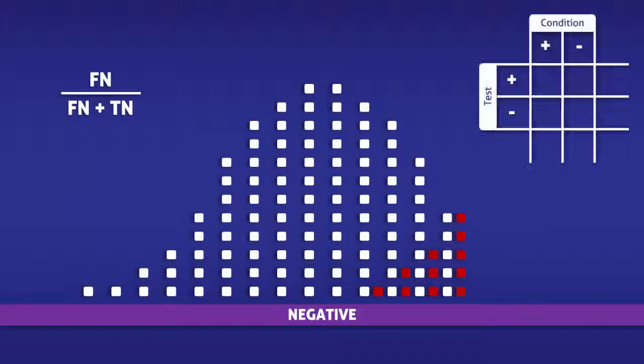When calculating the false emission rate, we only need to use the bottom row of the sample table. This row is used for people who tested negative. In the left box, we have the false negatives, in the middle box, the true negatives, and on the right, the total number of negative tests.